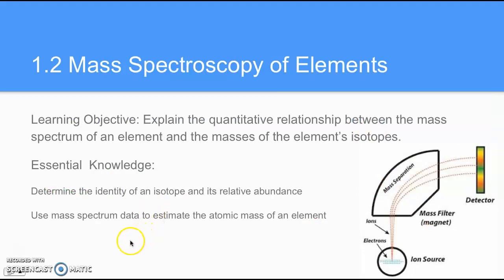Next, we have 1.2 on mass spectroscopy of elements. The learning objective here is to explain the quantitative relationship between the mass spectrum of an element and the masses of the element's isotopes. The essential knowledge is to determine the identity of an isotope and its relative abundance and to use mass spectrum data to estimate the atomic mass of an element.